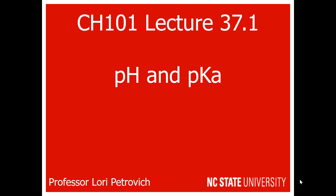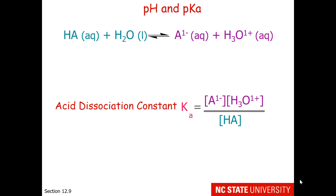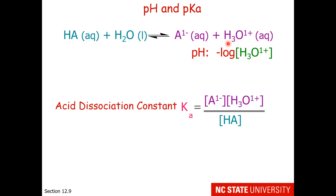We'll begin this lecture with a discussion of pH and pKa. You should already be familiar with the term Ka — the acid dissociation constant, which is a measure of the strength of an acid relative to water acting as the base. You may also be familiar with pH, which is the negative log of the hydronium concentration. pKa is simply the negative log of the Ka.